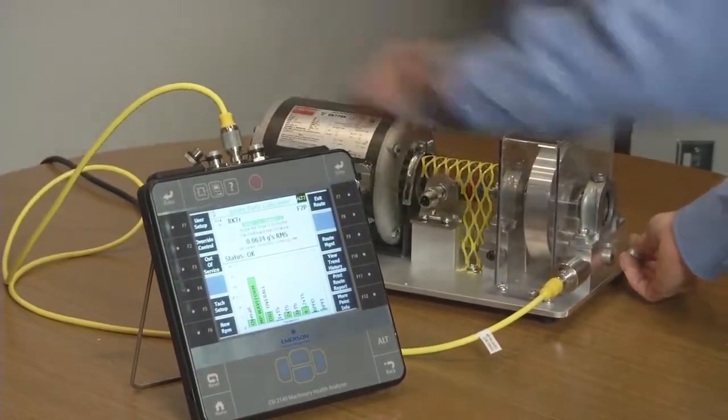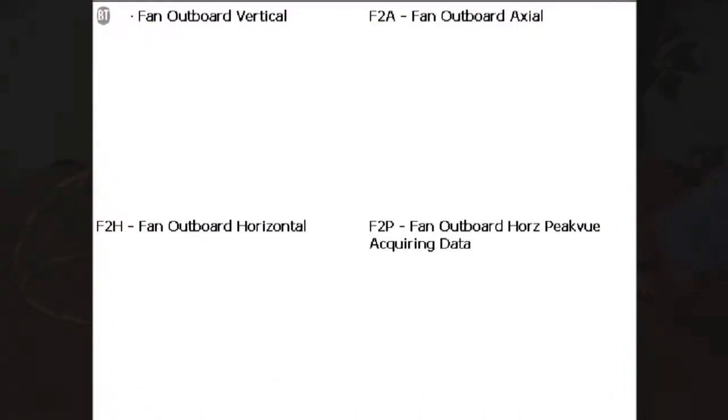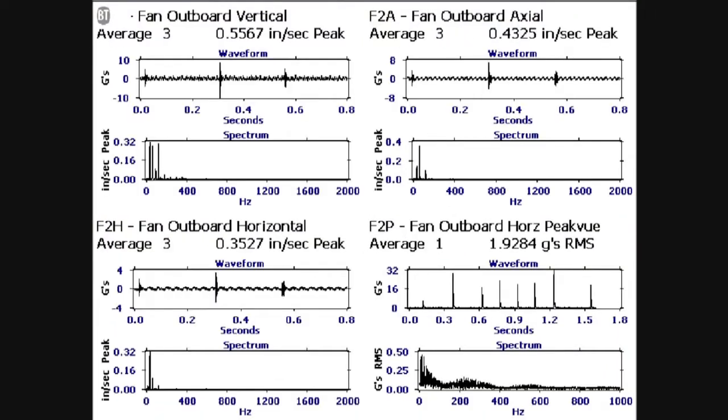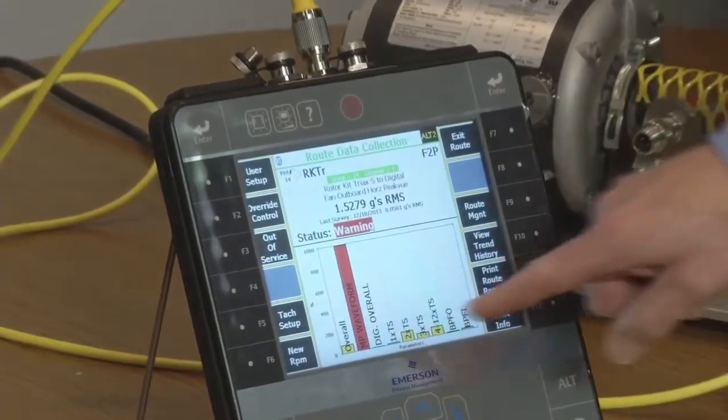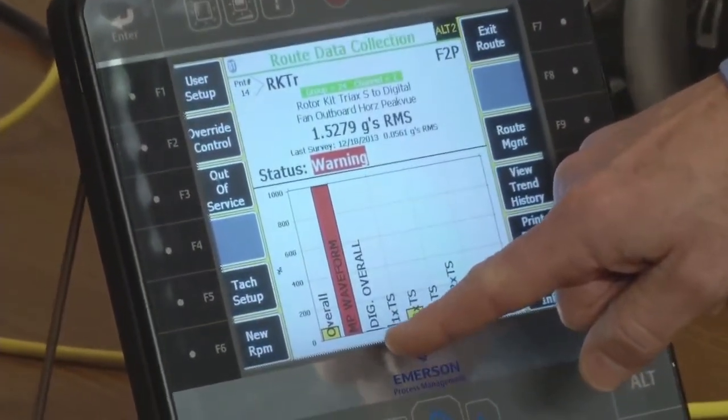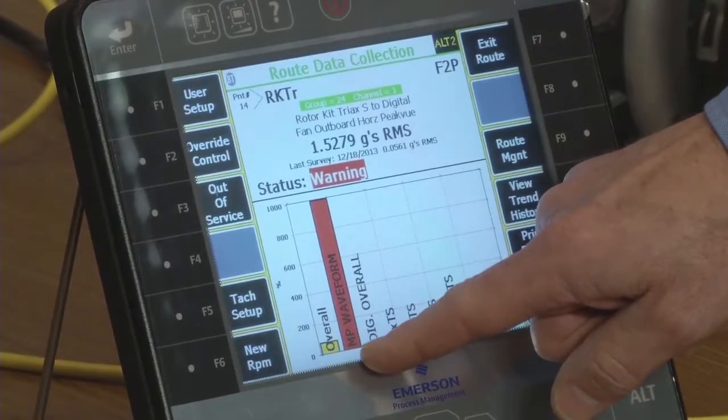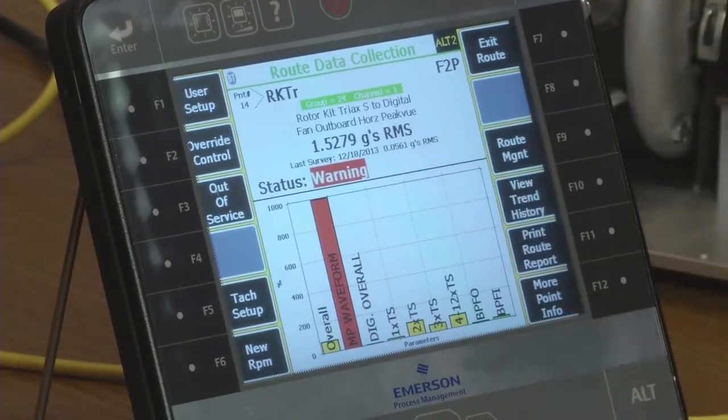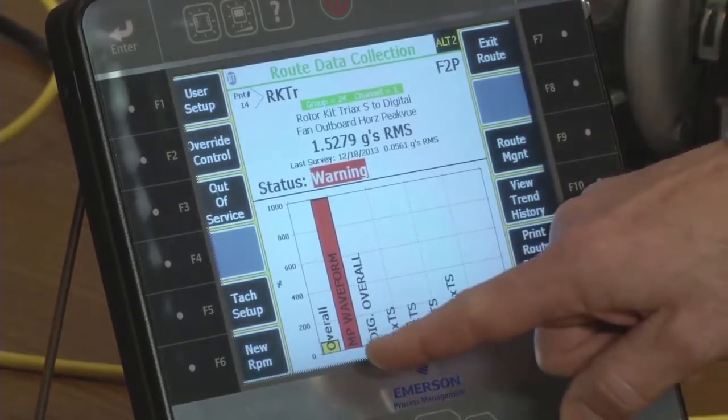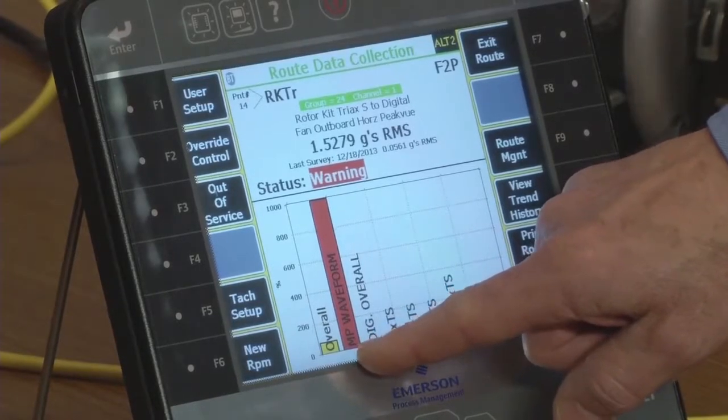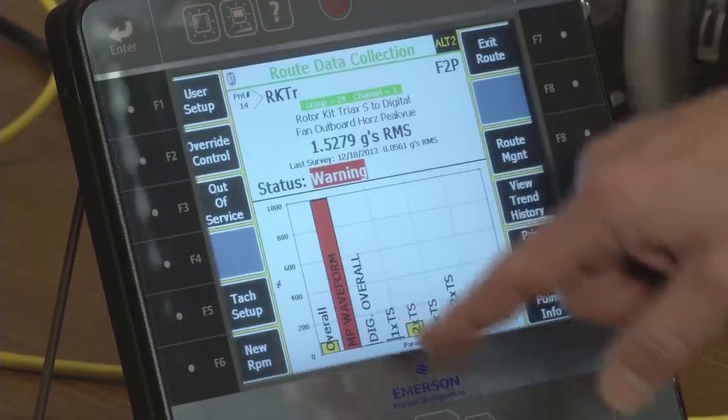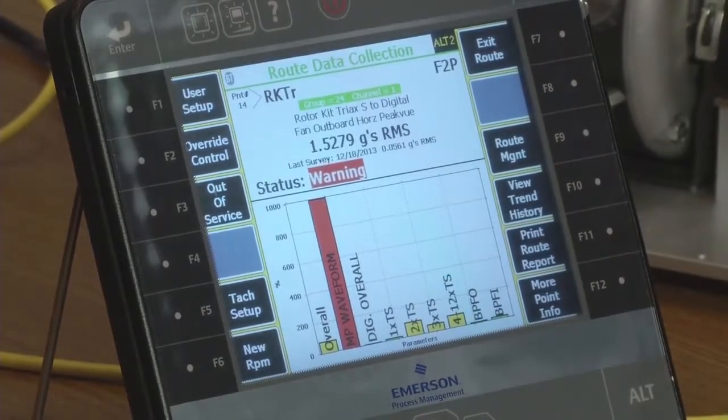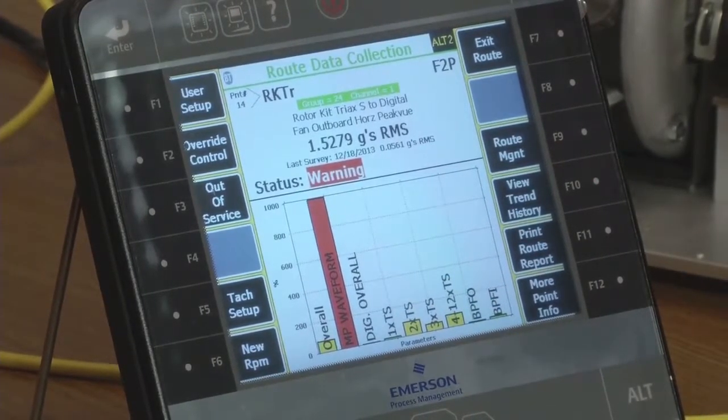I'll collect data and immediately we see it's gone from green good condition to warning high alert. This property right here is called maximum peak view on the waveform. This is actually analyzing a waveform parameter, not the spectral parameter.